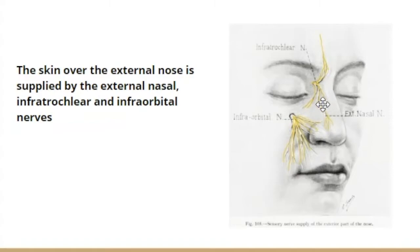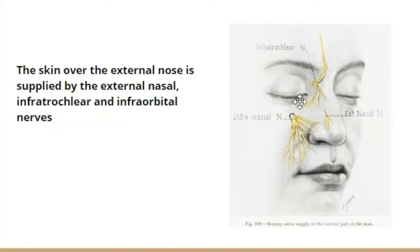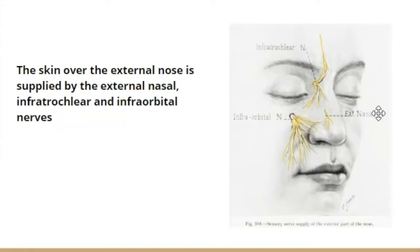So to recap: the anterior ethmoidal nerve supplies both the lateral wall and the nasal septum, then passes between the nasal bone and the lateral cartilage to emerge onto the face as the external nasal nerve, where it supplies the nares and the skin over the external nose. The external nose is thus supplied by two branches from the maxillary nerve and one branch from the ophthalmic nerve.